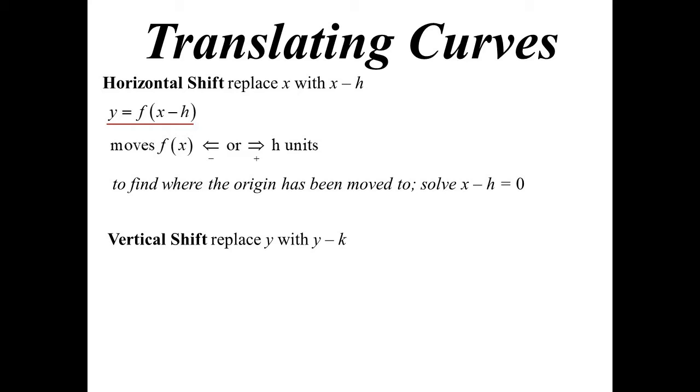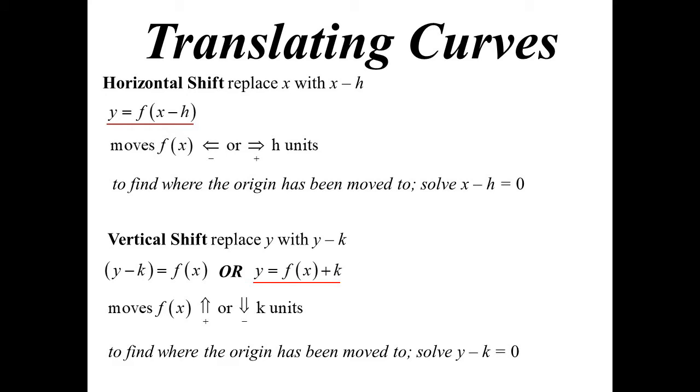Vertical shift then. We'll replace y with y minus k. So y minus k equals function x, though we don't normally see it written like that because we normally see equations with y the subject. So normally we see it as y equals function x plus k. But technically it's actually y minus k equals function x because it's the y that's being changed. And that'll move it up or down depending on the plus or minus of the k. Should you not be able to work it out, solve y minus k equals zero.